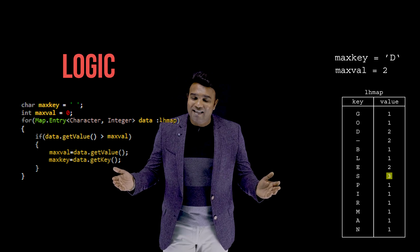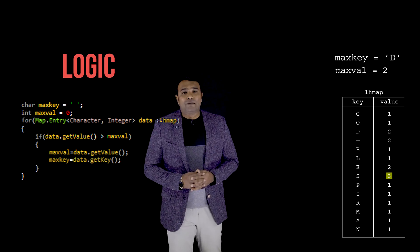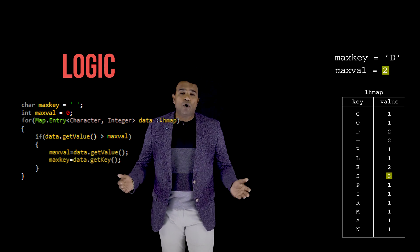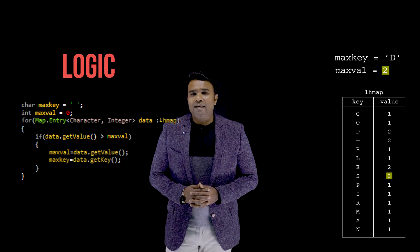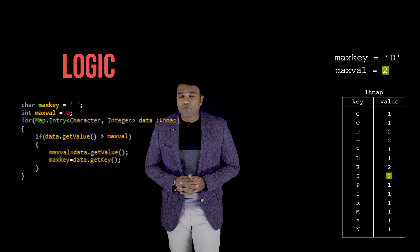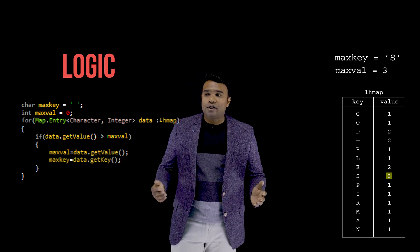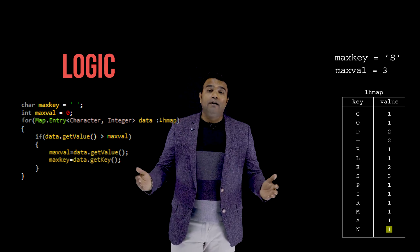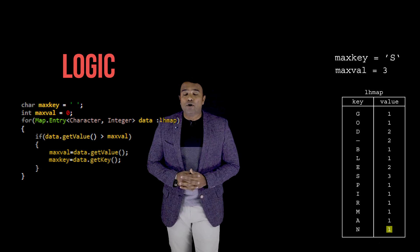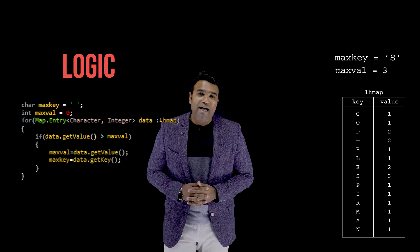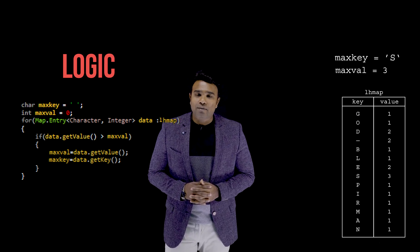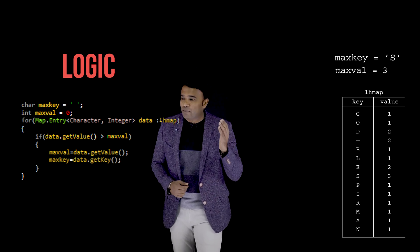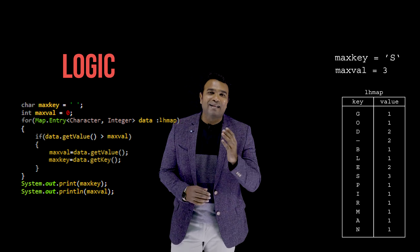The next time I encounter the value 3, it is greater than the current maxVal of 2, so the if-condition is satisfied. I update maxVal to 3 and maxKey to 's'. After this, the iteration continues and no other value in the map is greater than 3. By the end of the map, maxKey is 's' and maxVal is 3. After the loop, I print maxKey and maxVal to get the result.